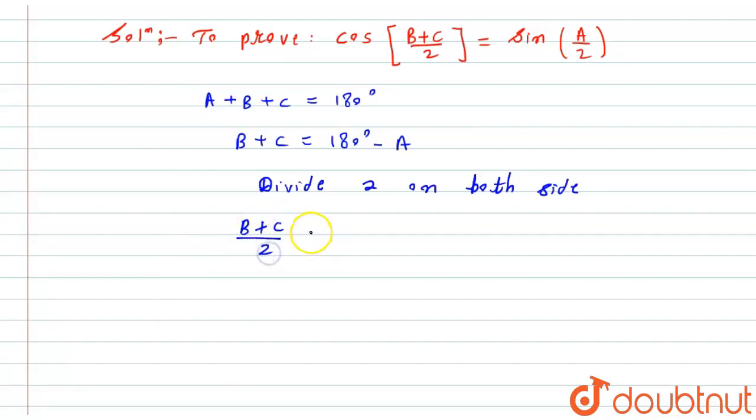(B+C)/2 equals 180/2, which is 90°, minus A/2. Now I will take cosine on both sides, so here I will say taking cos on both sides.